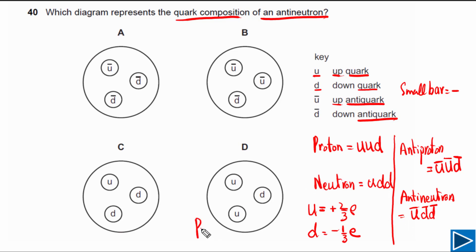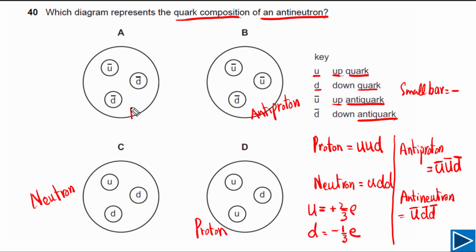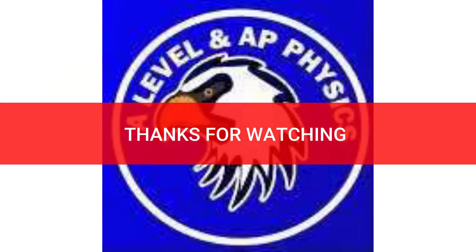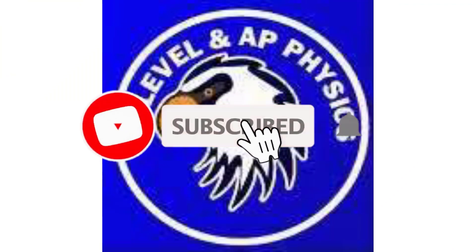Looking at the diagrams: a diagram with two up quarks and one down quark represents a proton. A diagram with one up quark and two down quarks represents a neutron. A diagram with two up anti-quarks and one down anti-quark represents an anti-proton. The diagram with one up anti-quark and two down anti-quarks represents an anti-neutron, and that is the answer to this question.